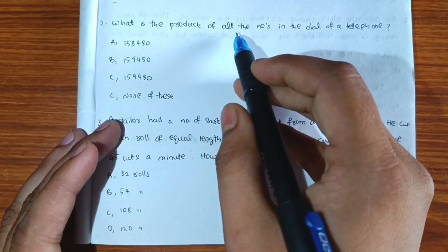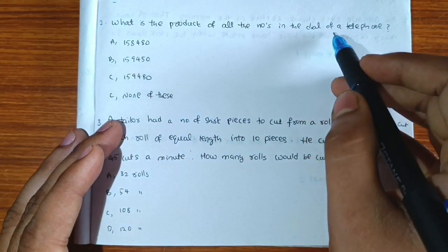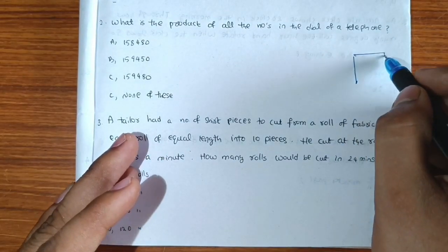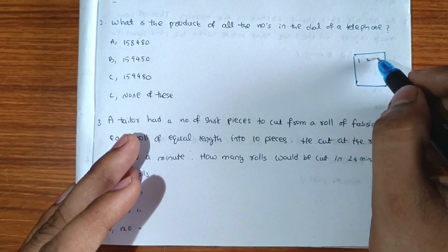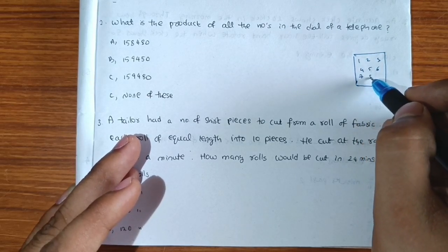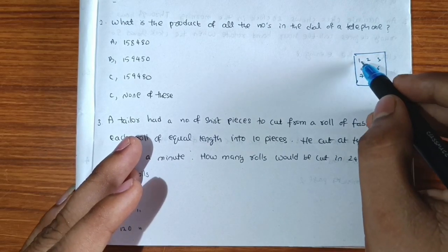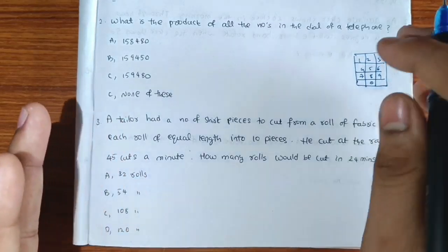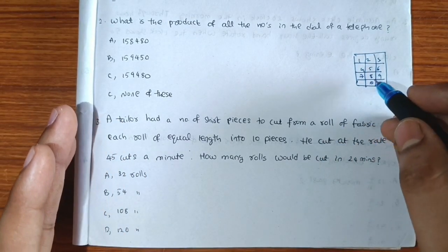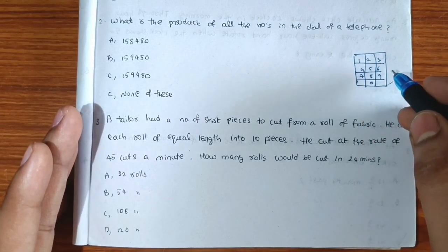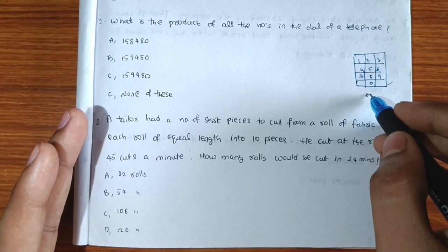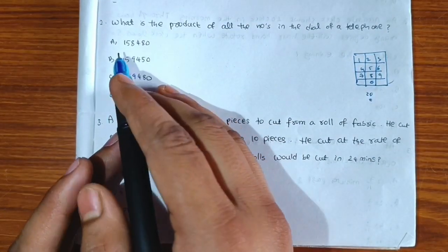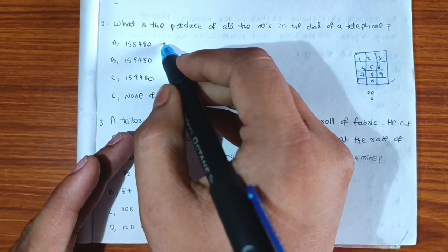The second question is: what is the product of all the numbers on the dial of a telephone? The telephone dial has digits 1 through 9 and also 0. Since zero is included, the product of all these numbers is zero. Checking the options, the answer is 'none of these'.